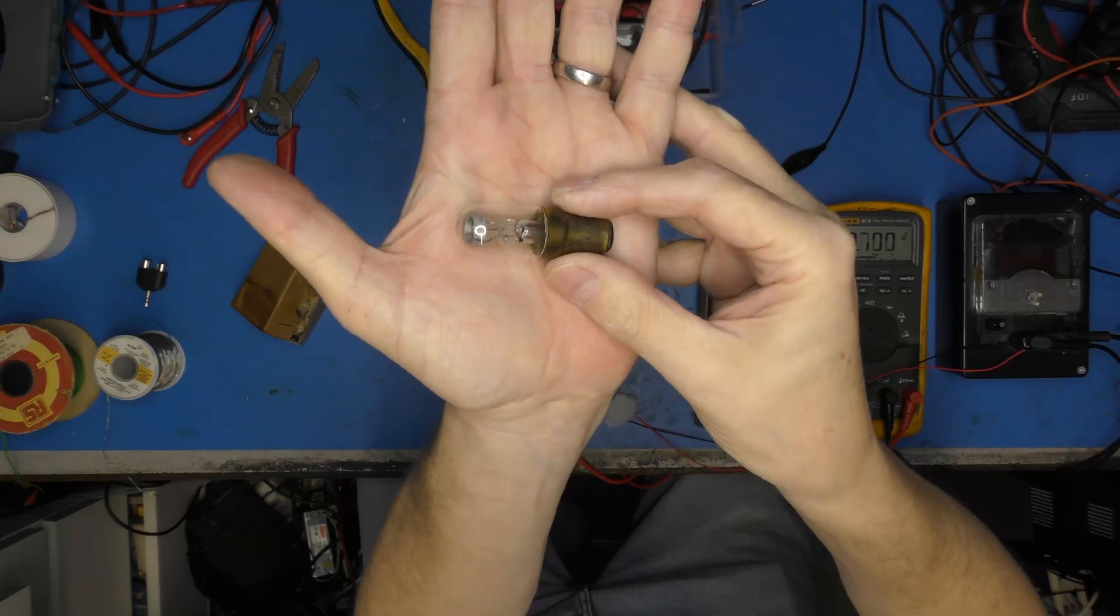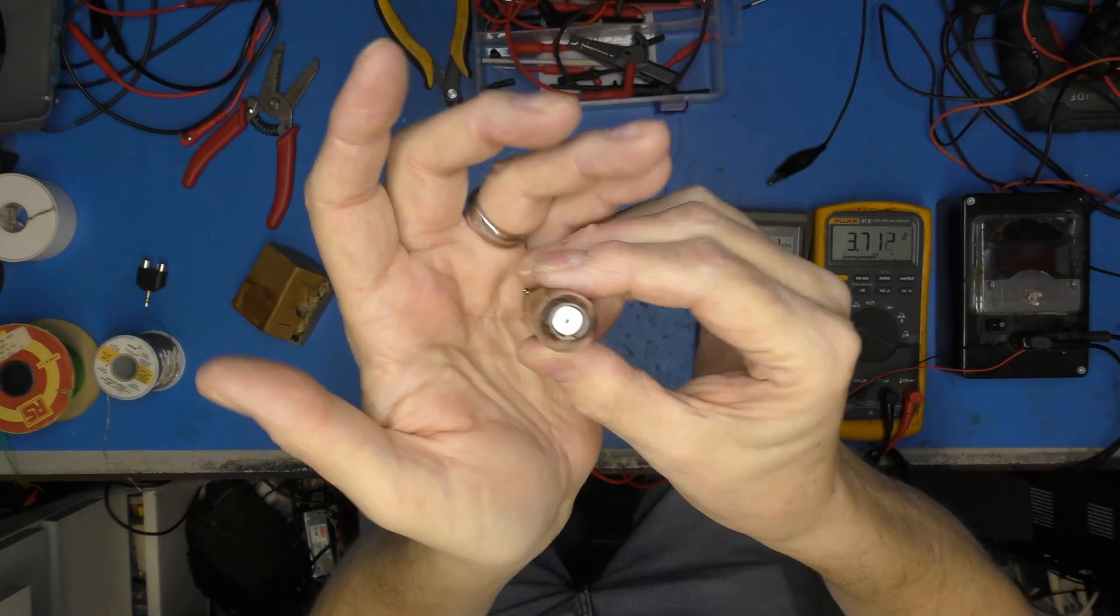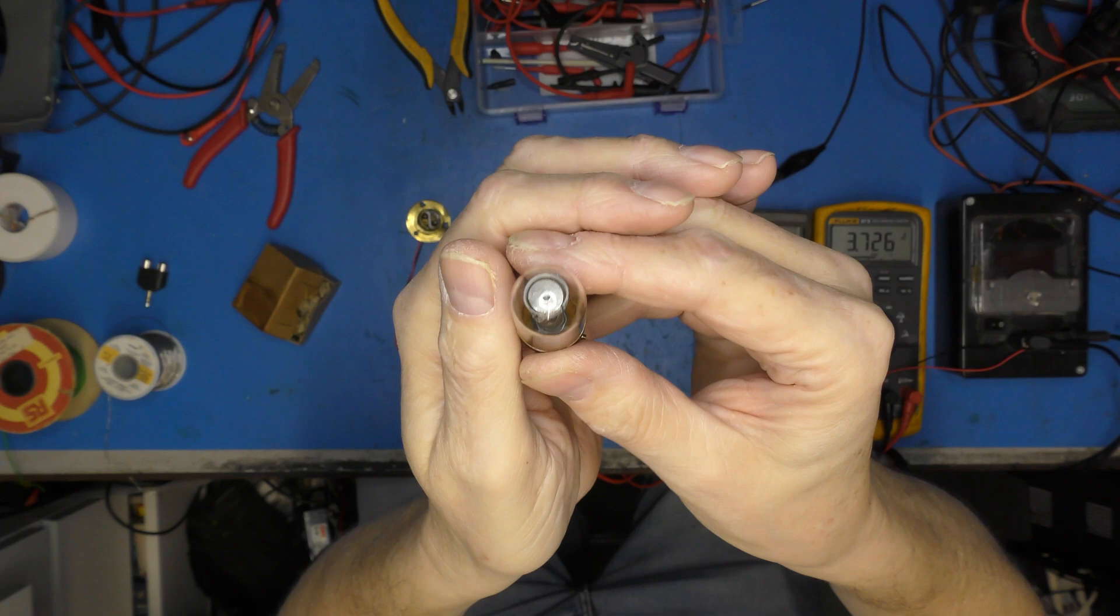It's of some vintage. This is a CV71. I'll hold it up to the top camera so you can see it. And it is called an Osglim.